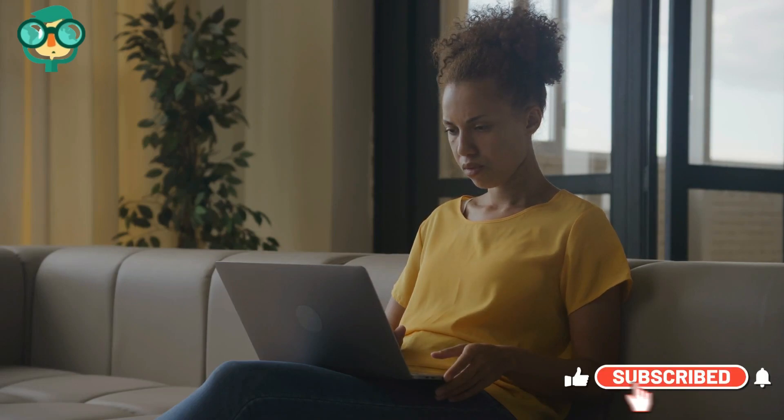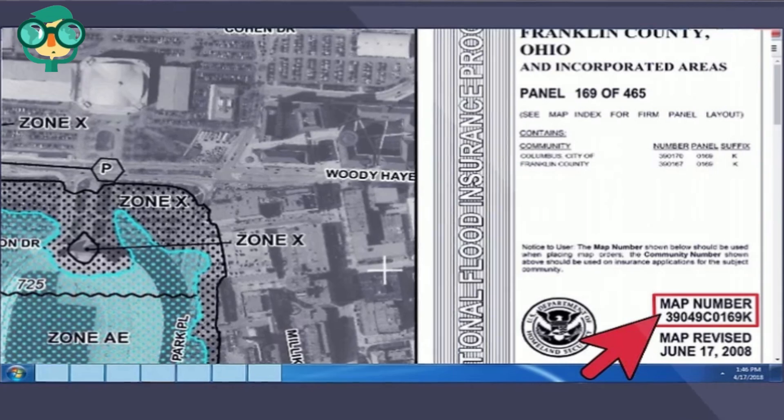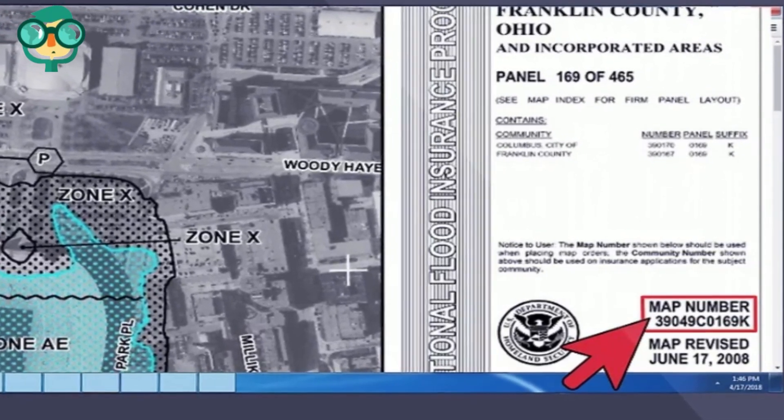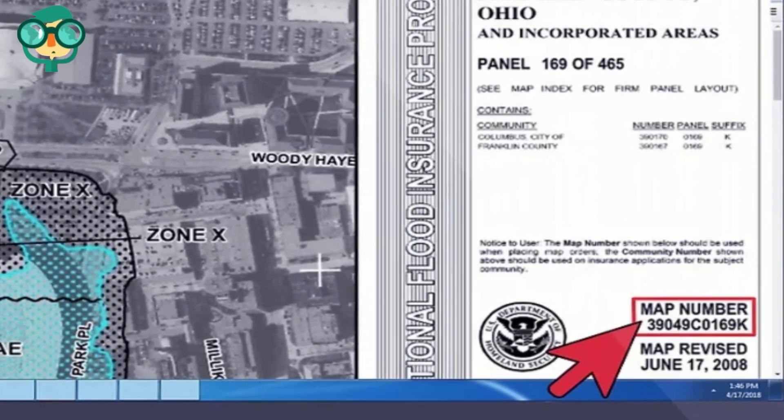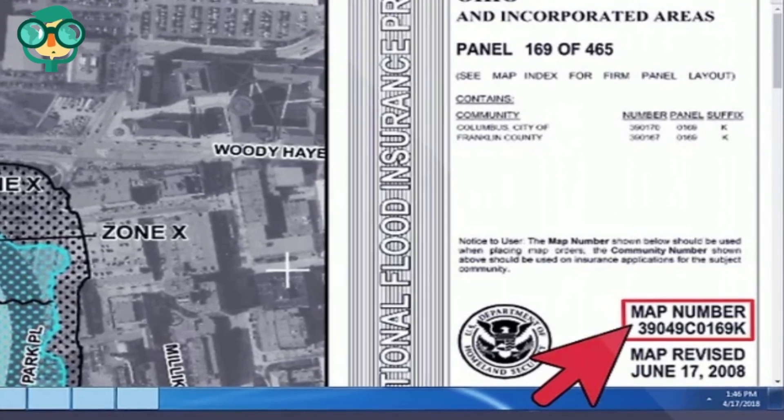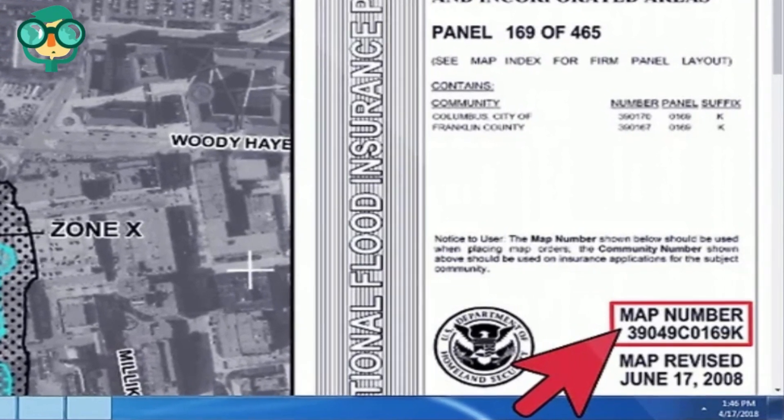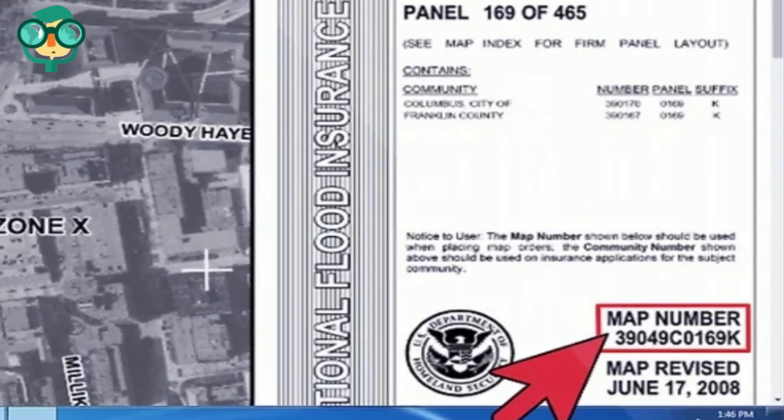Since the maps are large, they may be broken down into separate panels. The index lists each community, followed by a corresponding panel number. Arrange the panels if the map is paper. FEMA makes a few different paper flood maps, so you may need to do some assembling before you can read yours. Locate the panel number on the panel's title box. The title box contains all the clerical information about the panel, including the panel number. To view a particular area, select the panel with the same number listed in the index.